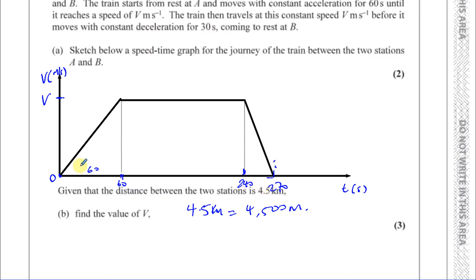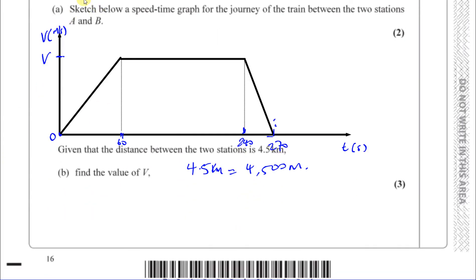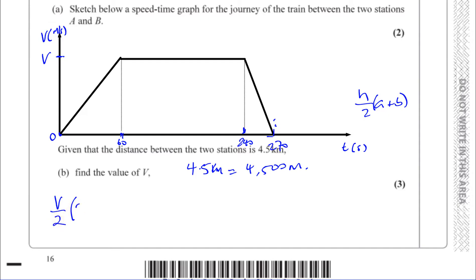The total distance on a speed-time graph is given by the area under the graph. This shape is a trapezium. The area of a trapezium is the distance between the parallel sides divided by 2, times the sum of the parallel sides. The distance between the parallel sides here is V, and the sum of the parallel sides is 270 plus 180, since one base spans the full 270 seconds and the other spans 180 seconds.